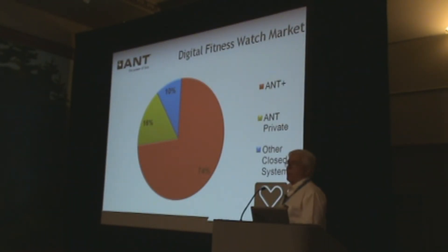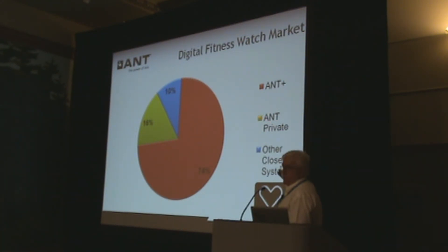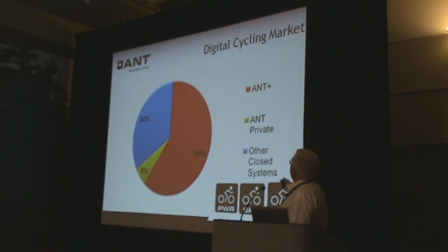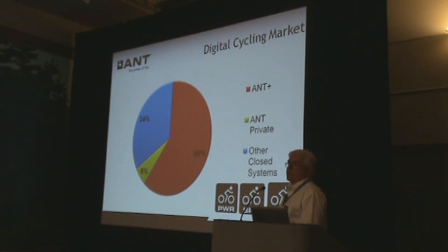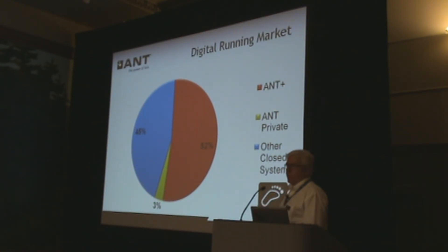Here are some statistics for when you go back and talk to your team. In the digital heart rate marketplace, 90% is ANT — Suunto uses ANT private, and the rest is ANT Plus, with only 10% being the rest of the world. In bike power and speed, we have 66% — two thirds of that market. And in digital running, we still have the majority at 55%. Congratulations to everybody that's made running products with ANT Plus.